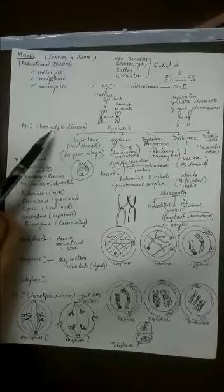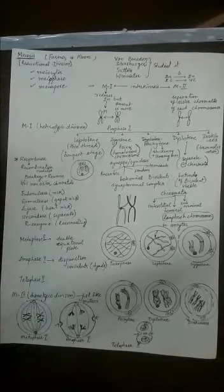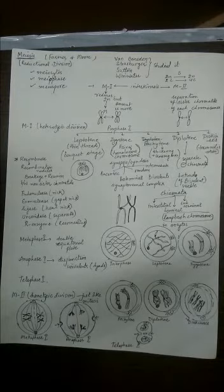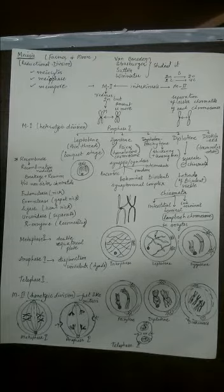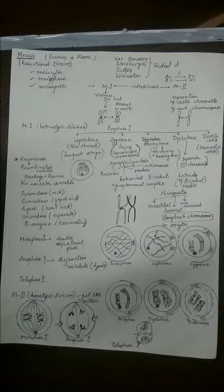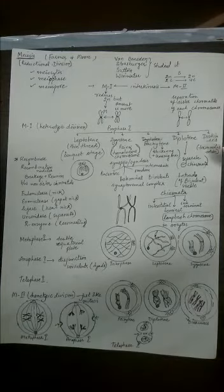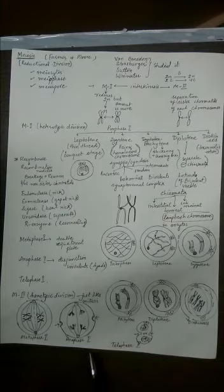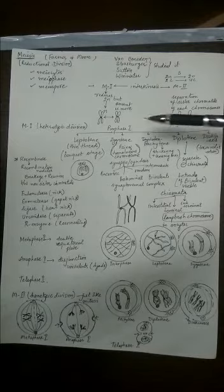Meiosis is called a different type — a heterotypic division. Meiosis I is divisible into steps. Mitosis has prophase, metaphase, anaphase, and telophase as karyokinesis. In meiosis I, karyokinesis similarly has prophase I, metaphase I, anaphase I, and telophase I, but prophase I is quite elaborate.